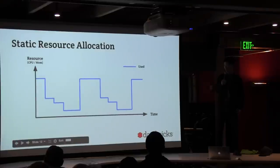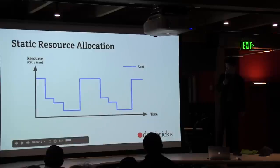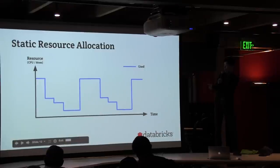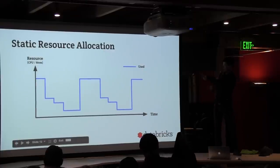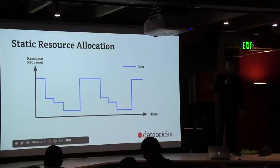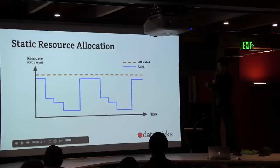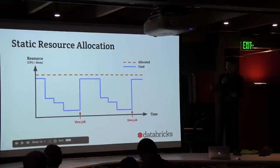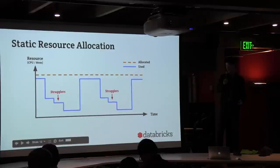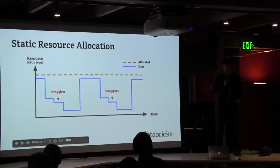Let's look at this problem from a different angle. This is a graph of resource usage of a particular application — a periodic job that runs every 30 minutes, accounting for each of those spikes. However, the allocation is actually static. Every time a new job comes in, you use more of the allocated resources, but when it goes down, it doesn't go down all the way because of stragglers.